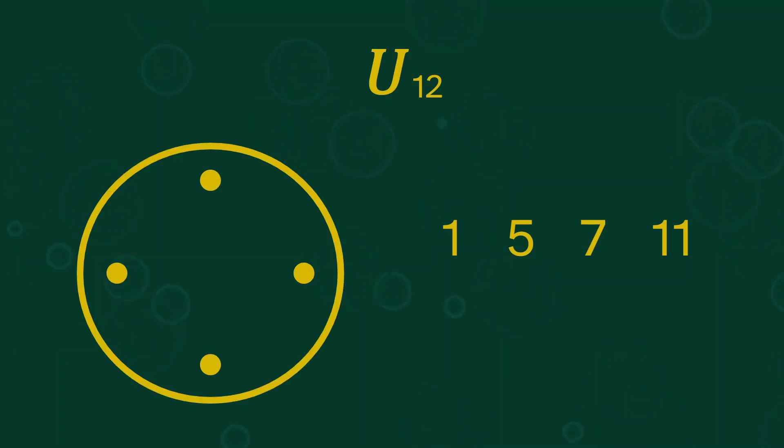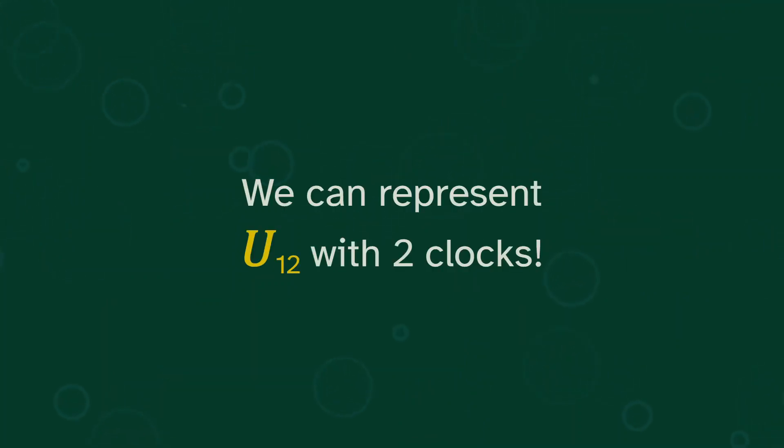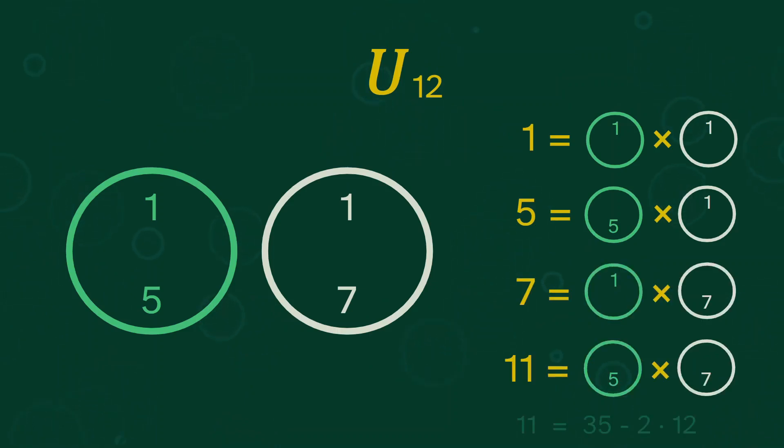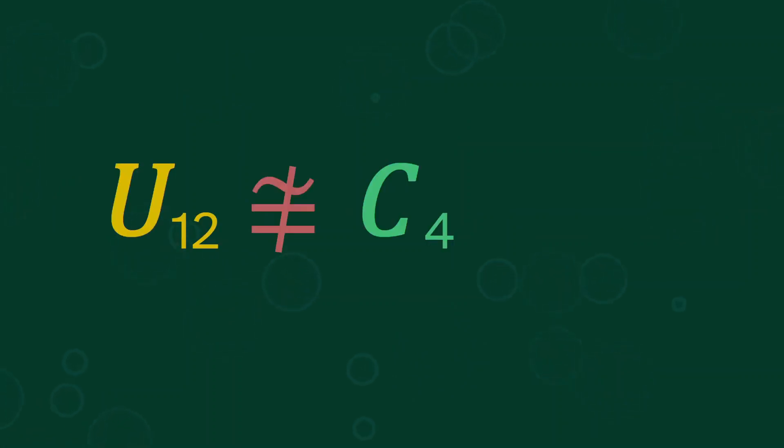Let's look at u12. There are 4 units mod 12, so let's try to fit them onto a 4 cycle. We'll put 1 on top, then notice that 5 squared is 1, so 5 must be halfway around. But 7 squared is also 1, so 7 must also be halfway around. The same is true for 11. But we can't put these all in the same position, so we can't use a clock to multiply them. But we can represent u12 with 2 clocks. Something like this. Where the value is the product across the clocks. So this is 1, 5, 7, and 11. So u12 is not a 4 cycle. It's the product of a 2 cycle and another 2 cycle.